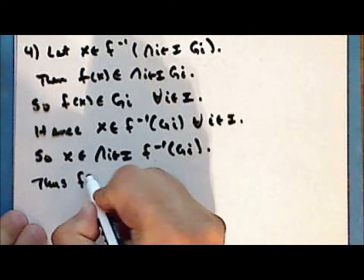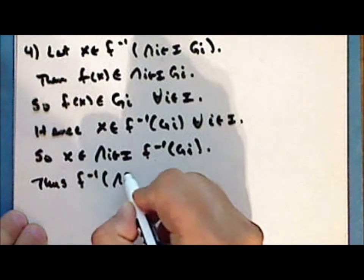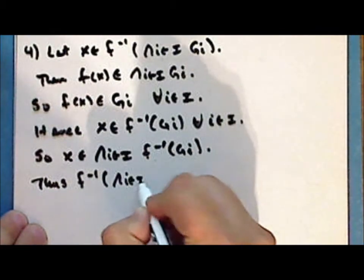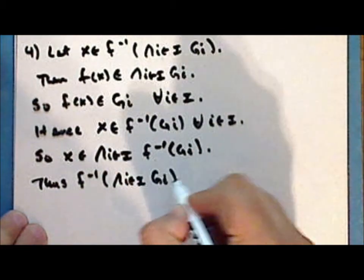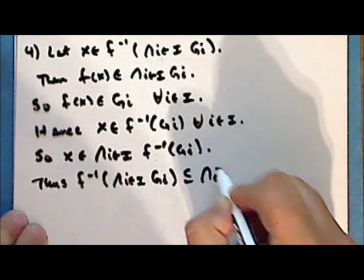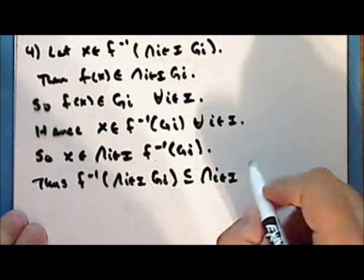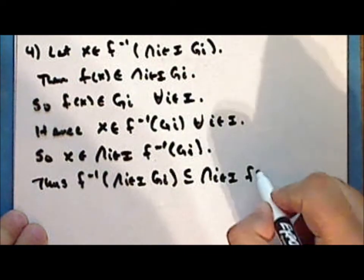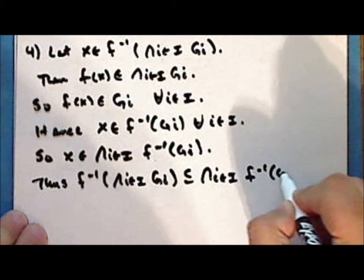And thus, the inverse image of the intersection of the sets g sub i is a subset of the intersection of the inverse images of those sets.